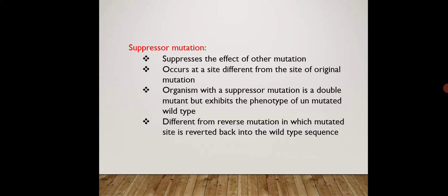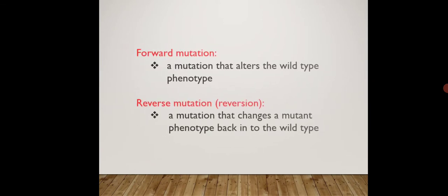Suppressor mutation is different from reverse mutation, in which the mutated site is reverted back into the wild type sequence. In suppressor mutation, there is suppression of the effect of one mutation. If there are two mutations in a gene, either the first type will be shown or the second type will be shown — if the first is seen then the second will be suppressed, and if the second is seen then the first will be suppressed.